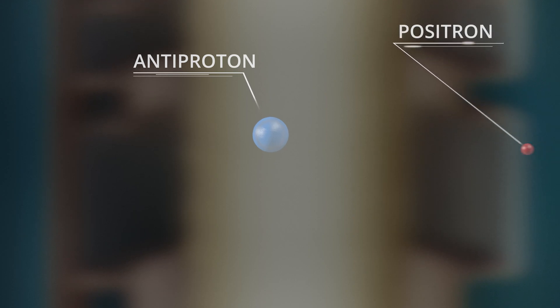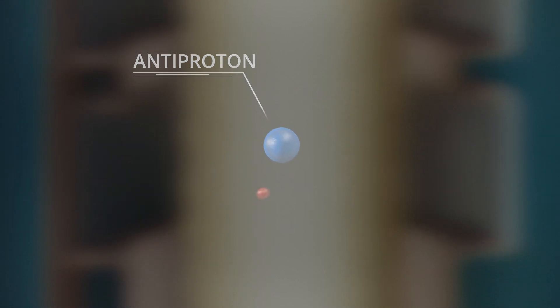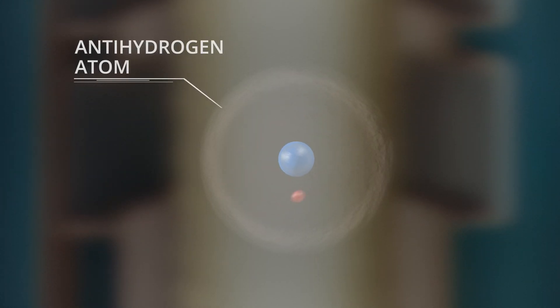Antihydrogen atoms are formed when two positrons collide in the field of the antiproton. One of the positrons gets captured, and you have a neutral antihydrogen atom, which is trapped because it's a little bit magnetic.